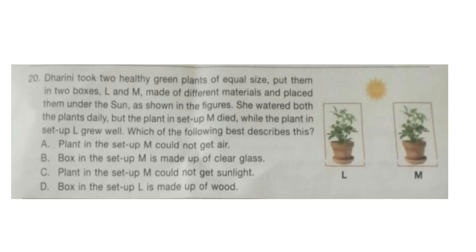Question 20: Dharini took two healthy green plants of equal size, put them in two boxes L and M made of different materials, and placed them under the sun. She watered both plants daily, but the plant in setup M died while the plant in setup L grew well. Which of the following best describes this? Statements: A: Plant in setup M could not get air; B: Box in setup M is made of clear glass; C: Plant in setup M could not get sunlight; D: Box in setup L is made of wood. Think about the answer — you can also write your answer in the comment section.